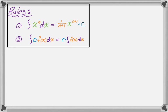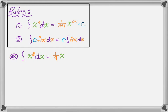So those are our two rules, and now we're going to do a bunch of problems. The first example is the integral of x to the 8th dx. This is a straight application of rule number one: we add 1 to the exponent to get 9, multiply by the reciprocal 1/9, giving (1/9)x to the 9th plus C. And that's the antiderivative.